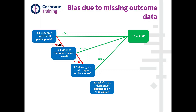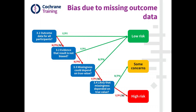Then we start getting to the higher risk of bias. If we think it's likely that missingness depends on the true value, then we call that high risk of bias. On the other hand, the last situation is that there are missing data, we don't have evidence that it wasn't biased, missingness could depend on the true value, but we're not convinced that it did. Then that's a situation we would articulate as: there are missing data but no evidence that it was probably a problem — so we're just a bit worried.